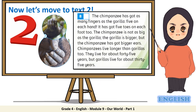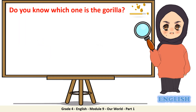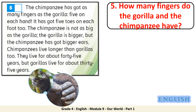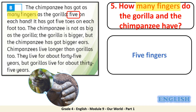Now let's move to text number two. Do you know which one is the gorilla? It's this one, because we know that the first picture is for the chimpanzee. Question 5: how many fingers do the gorilla and the chimpanzee have? Let's highlight the keyword: many fingers. When we use how many, we're asking for a number. The answer is five fingers. Great job.